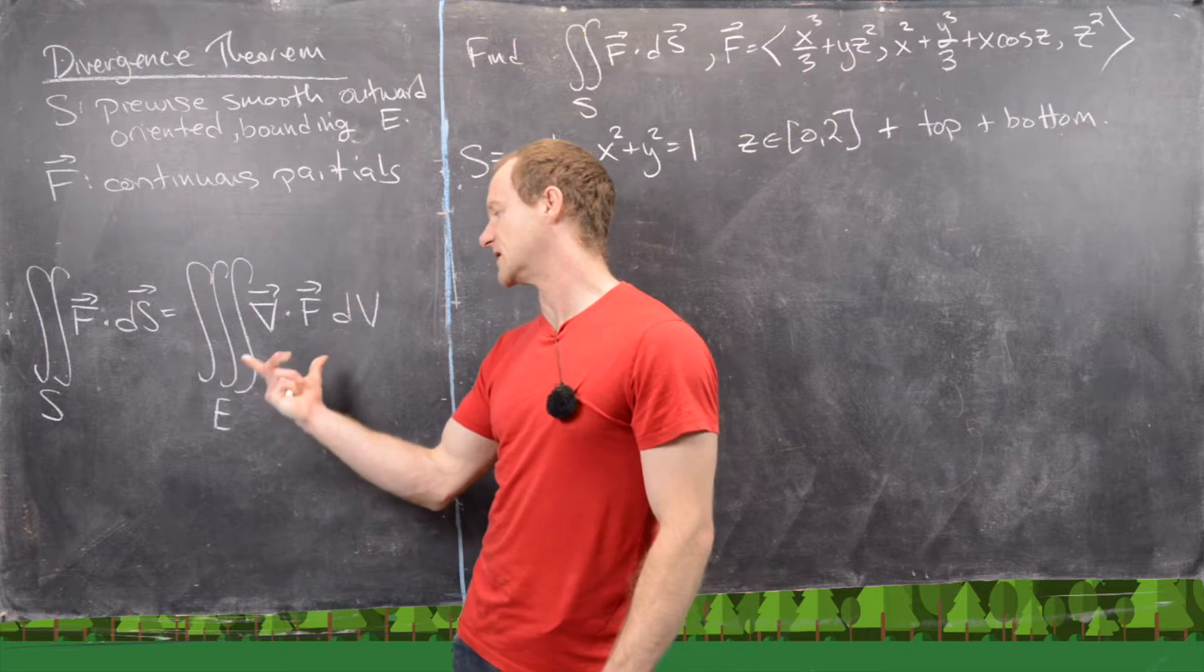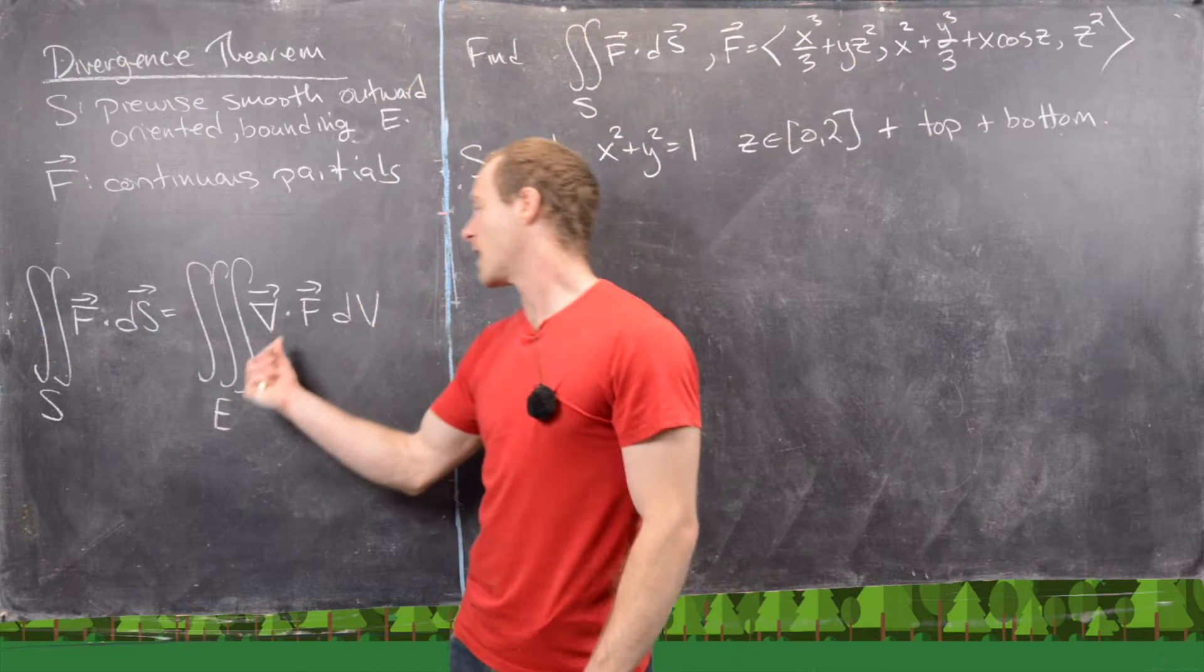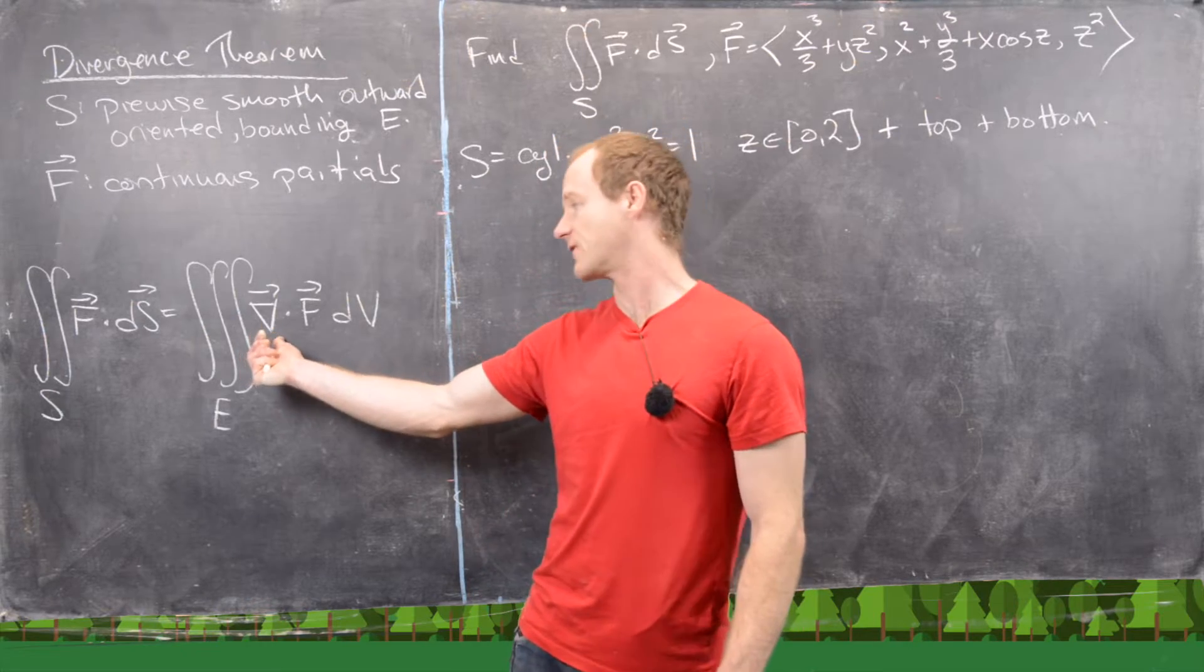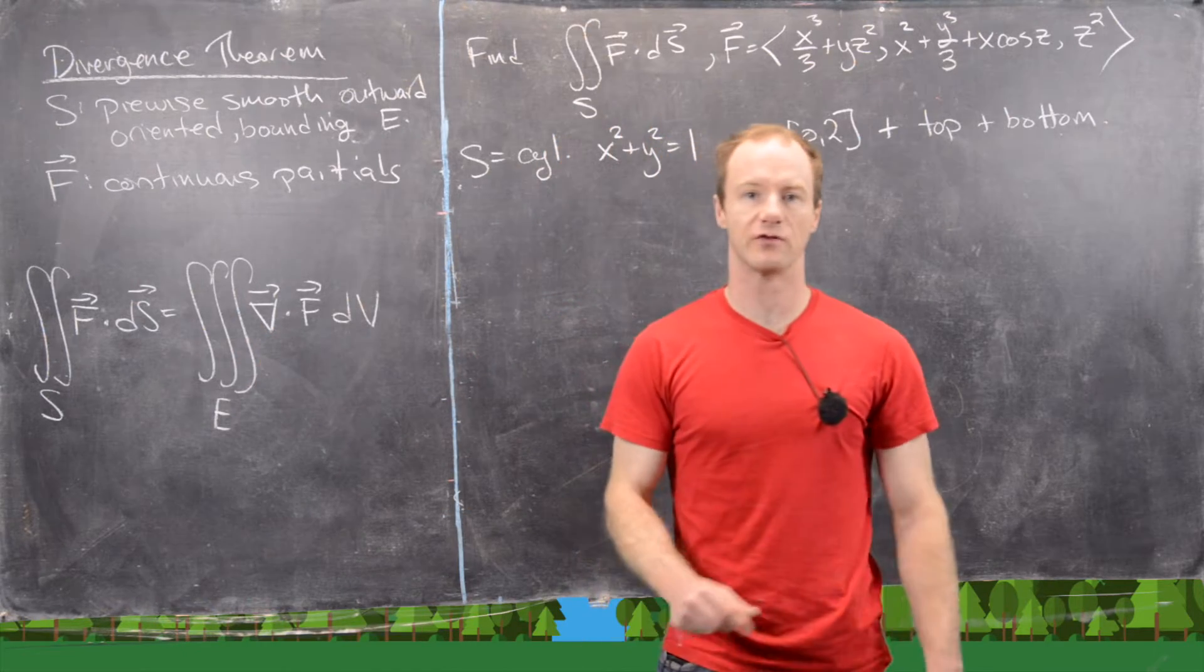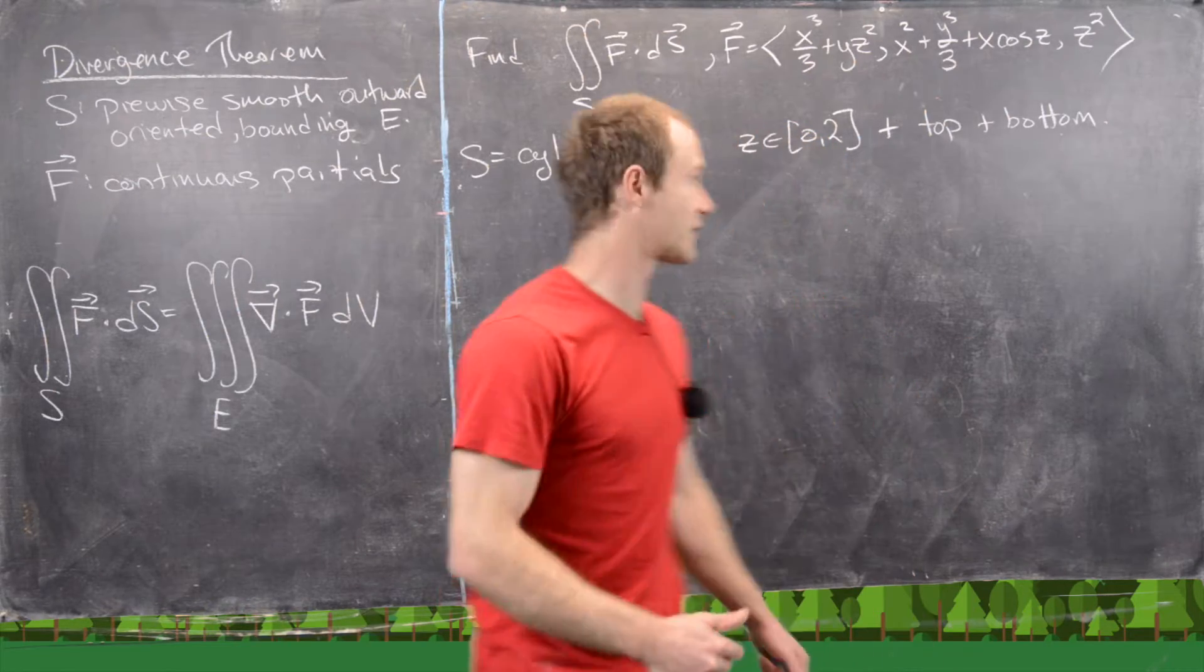So the way you want to think about this is we go from three integrals to two, having this special derivative called the divergence annihilate one of the derivatives. So this is like some higher dimensional analog of the fundamental theorem of calculus.